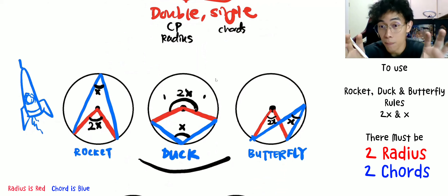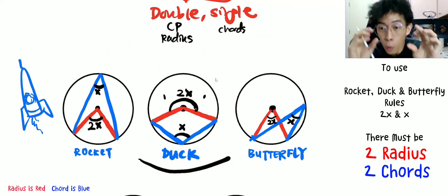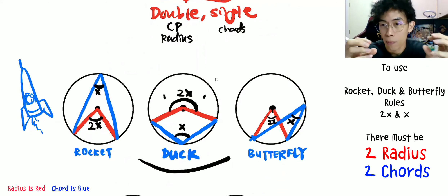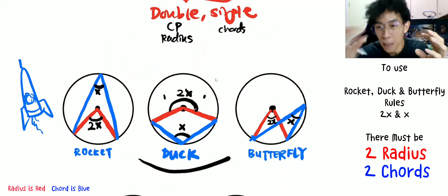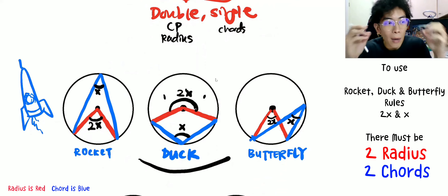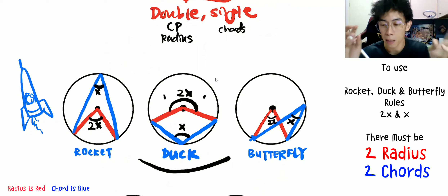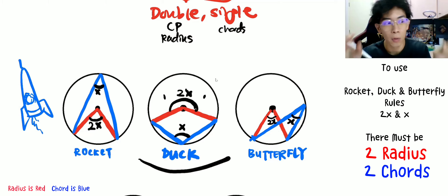Between rocket and duck, there's a relation. Between rocket and butterfly, there's a relation. It's the same picture — they just draw it in a different manner. I want you to explore this ideology so that when you do circles, you can think in a creative way. You have to imagine a bit.